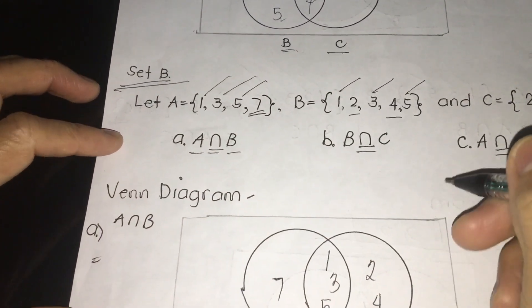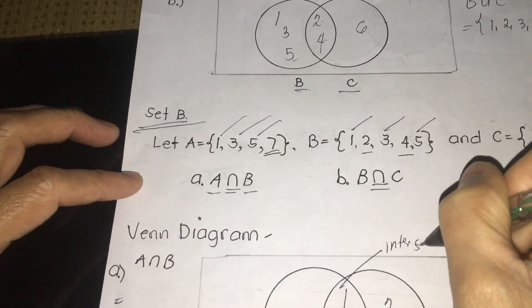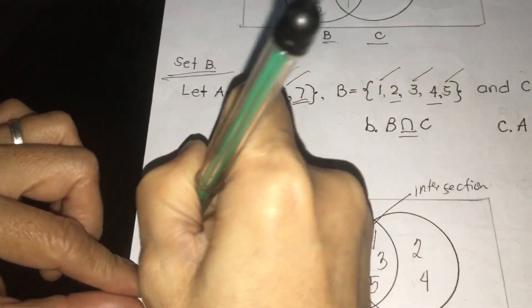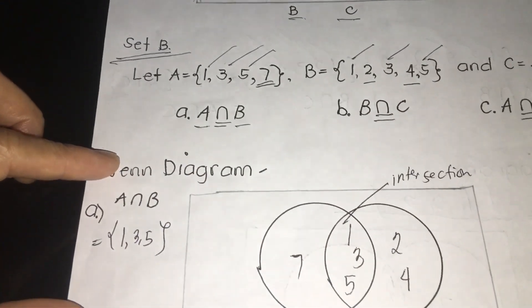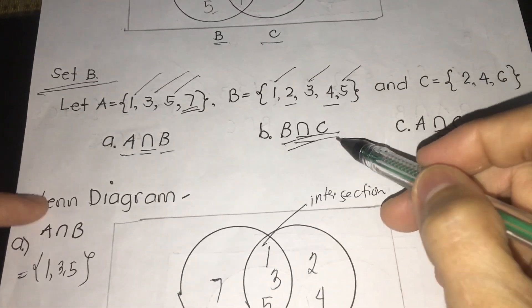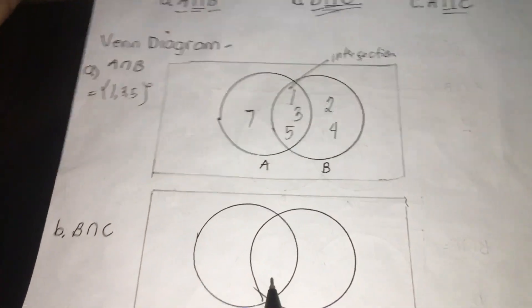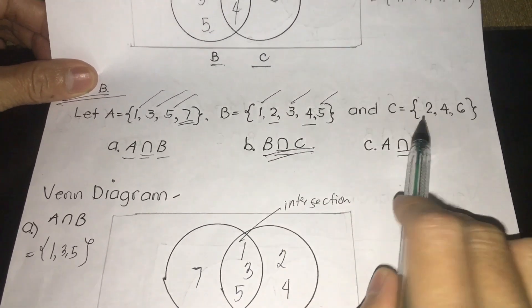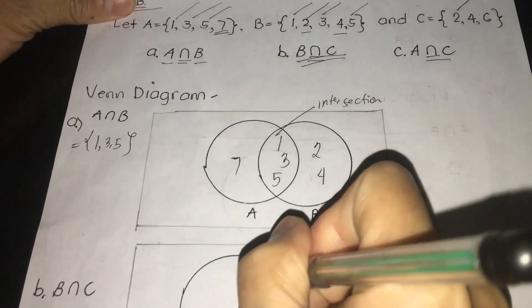Therefore, our final answer here. In letter A, we're going to write only the intersection. This is what we call the intersection. Don't forget to use your braces. 1, of course, the comma. 1, 3, and 5. It's easy. What's next? We have the intersection B intersect C. Same procedure. We're going to get their common elements here. We're going to write at the center. We have first in letter B, we have 1, so there's no 1 in C. Then, 2. We're going to put a check. We're going to write, jot down automatically at the center. 2.